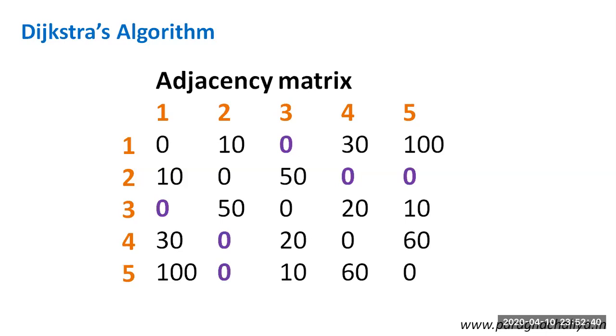The same thing is applicable for node 2 and node 5, 3 and 1, 4 and 2, 5 and 2. So the number indicated in purple color is 0. That means there will not be any kind of edge between these nodes.